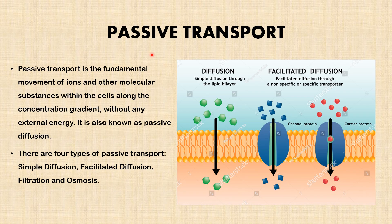Now let's move to passive transport. Passive transport is the fundamental movement of ions and other molecular substances within cells along the concentration gradient without any external energy — it is also known as passive diffusion. Here you can see the cell membrane, the phospholipid bilayer. Materials move in and out of the cell from a region of high concentration to the region of low concentration. In the case of facilitated diffusion, a protein carrier or channel protein is needed to move materials from high to low concentration. There are four types of passive transport: simple diffusion, facilitated diffusion, filtration, and osmosis.